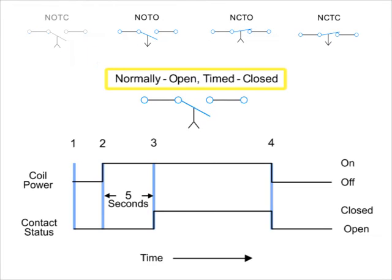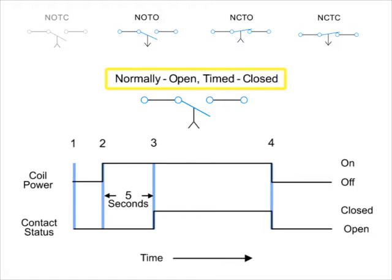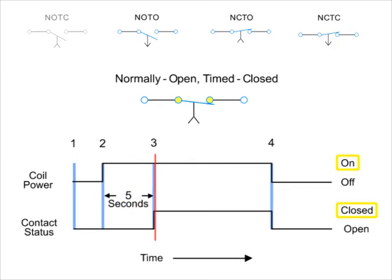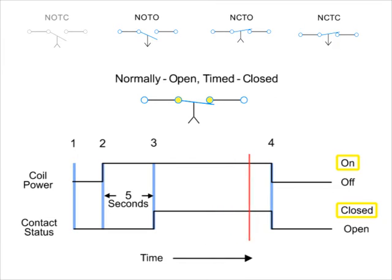First, we have the normally open, timed closed — NOTC — contact. This type of contact is normally open when the coil is unpowered or de-energized. After the coil has been continuously powered for a specified amount of time, in this example five seconds, the contact is closed. The contacts will immediately open when the coil is de-energized.